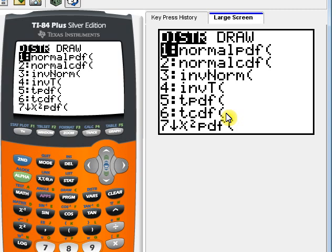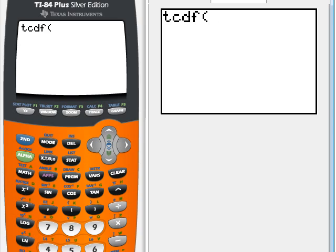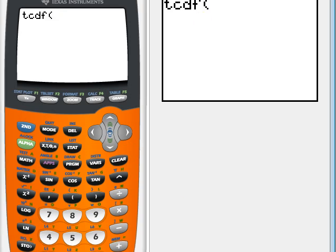Remember, we want to put in our left endpoint first. So that's 2.522 and then a comma. That's just above the seven.